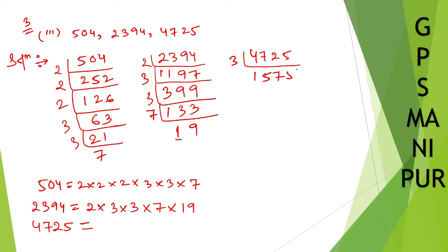By 3 again: 175. By 3 again: we cannot divide further by 3 after getting to 175.